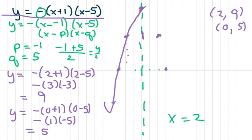And this is the vertex up here. The vertex is at 2 comma 9, and this point here is negative 1 comma 0. This point here is 5 comma 0.